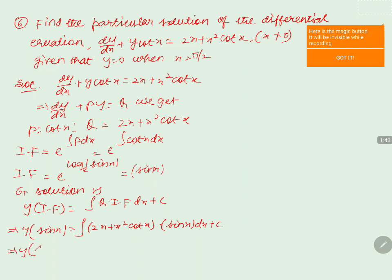We get y·sin(x) = ∫2x·sin(x) dx + ∫x²·cot(x)·sin(x) dx + c, splitting into two separate integrals.